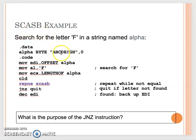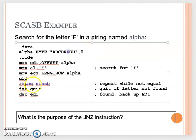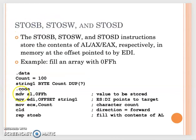So when you're looking for a match, you do REPNE or REPNZ — they are the same. Or if you want to find where the array stops matching, you try to find the non-match. So then we will do REPE. That's the third instruction. Actually, we have two more.